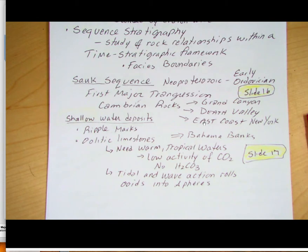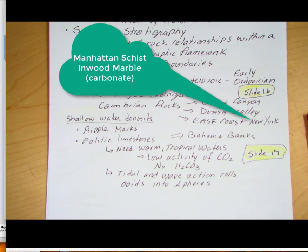On the East Coast the rocks have been heavily metamorphosed from different orogenic events. Some of the ones we see there are the Manhattan Schist — schist is a metamorphic rock that was probably originally a clastic sandstone or shale. We also see a limestone there that documents that Sauk sequence in the New York area along the East Coast.